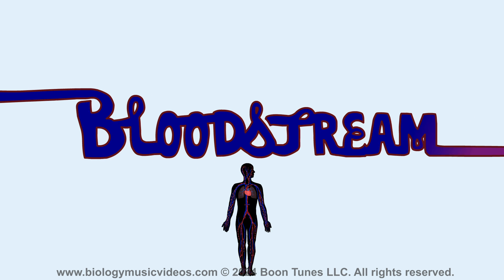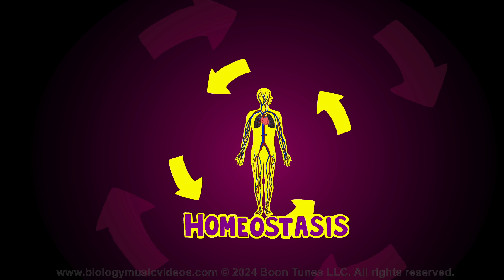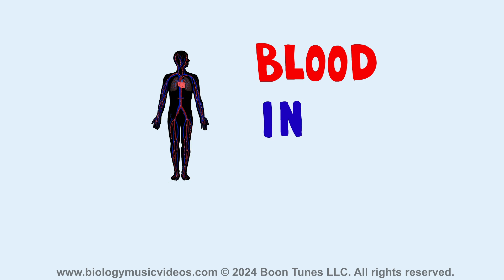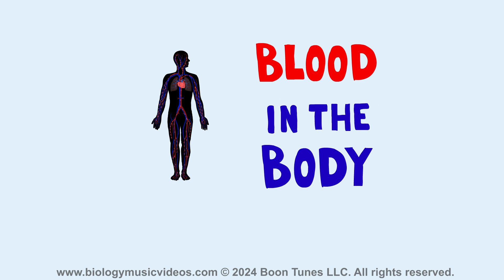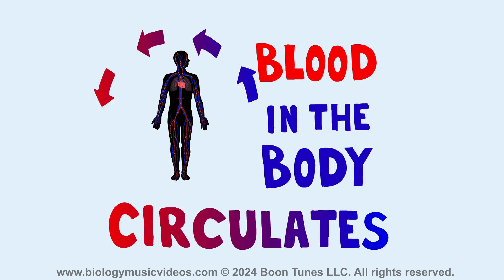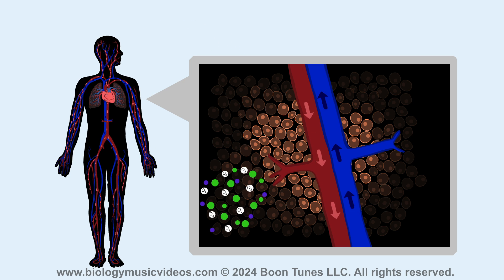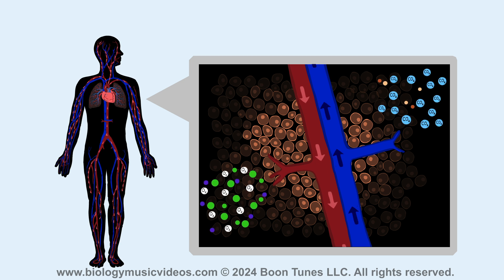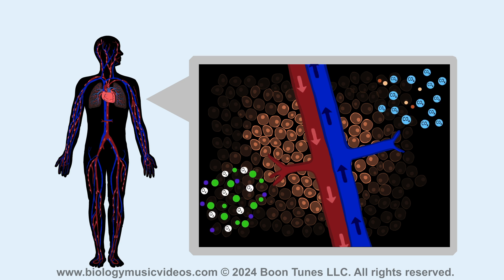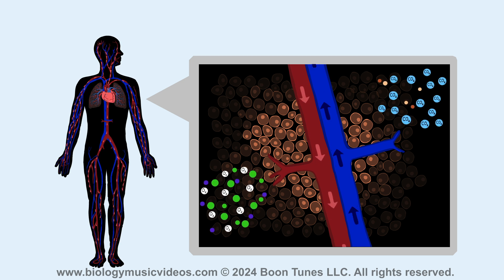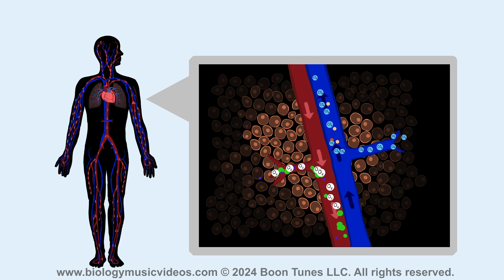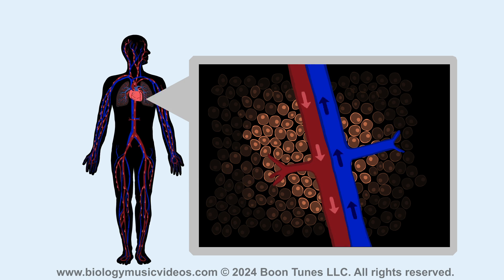Follow along as I describe how the bloodstream is utilized to transport products and help regulate homeostasis over steady state. Blood in the body circulates to transport products and to transport base. They can't move around by themselves, and so the bloodstream takes them where they gotta go.